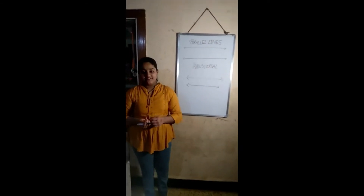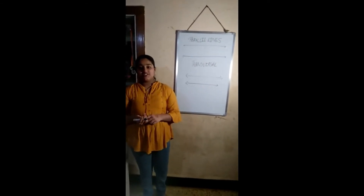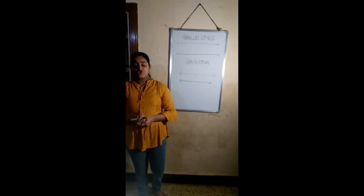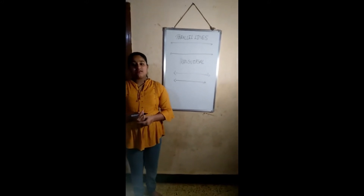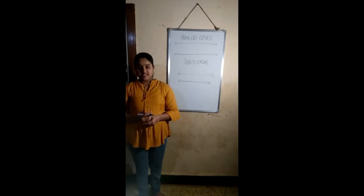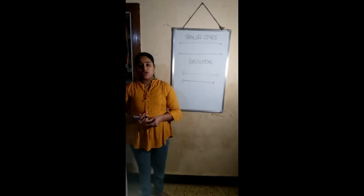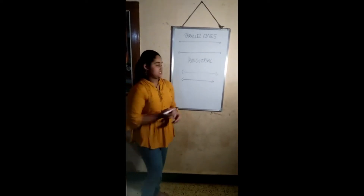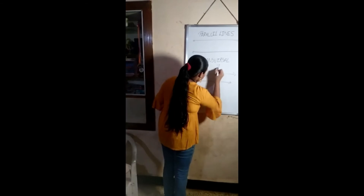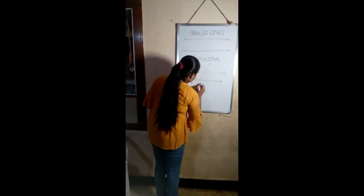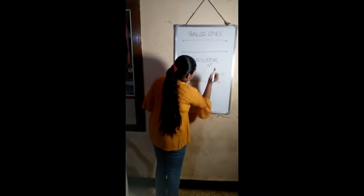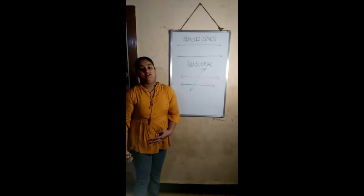Now let me tell you what a transversal is. The line which cuts the parallel lines at distinct points is called a transversal. In this figure, P is a transversal.